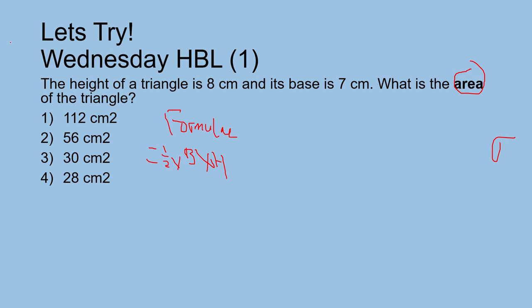Now we just have to do half times the base, which is 7, times the height, which is 8. So we do simplification: 7 times 4 equals 28, option 4.